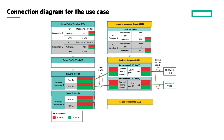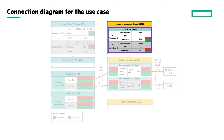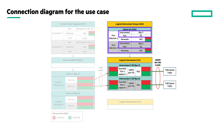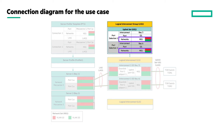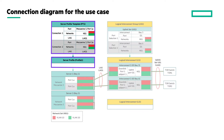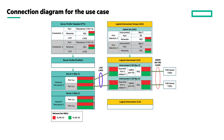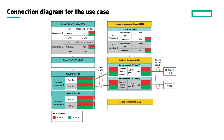We have an uplink set that uses one port from each of the interconnects within the enclosure, thereby forming a link aggregation group. The network set containing red and green networks is assigned to the uplink set. Additionally, the server profile connections that are part of the configuration also use the same network set. LAG is configured on both the uplink set and the server profile connections. The goal of this configuration is to ensure that if one interconnect experiences an outage, the other handles the traffic seamlessly.